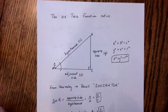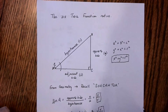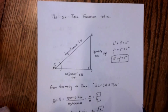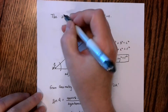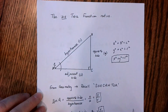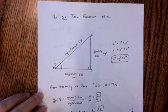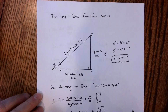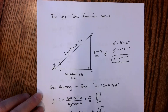Let's continue our discussion. We're going to discuss today the six trig function ratios. I said there's six. In geometry, you were introduced to three: sine, cosine, and tangent. We're going to add three more on to that in just a few minutes.